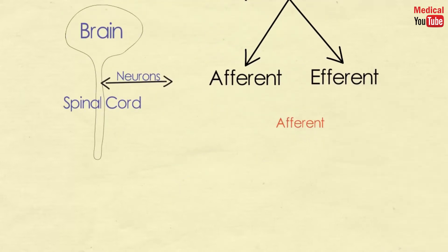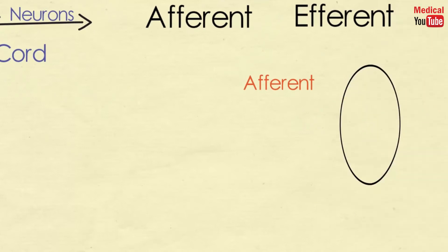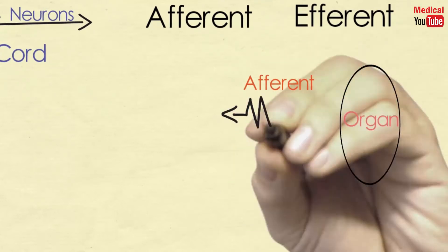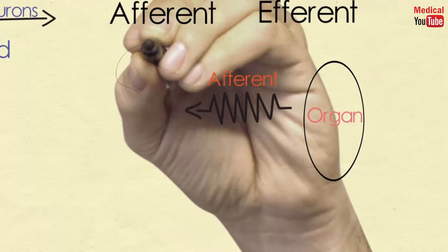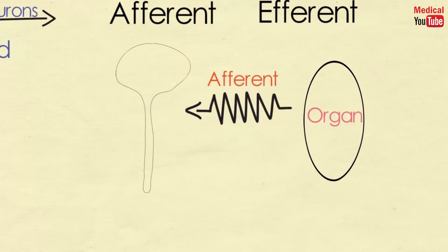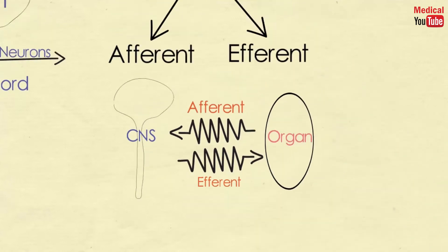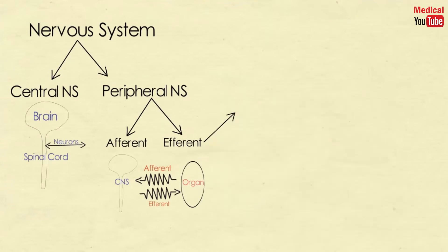The afferent neurons bring information from the periphery to the CNS, and the efferent neurons carry signals away from the brain and spinal cord to the peripheral tissues.